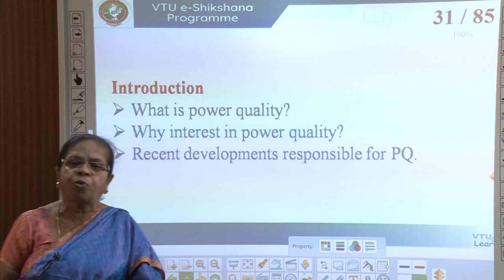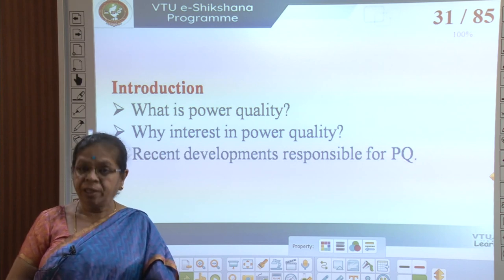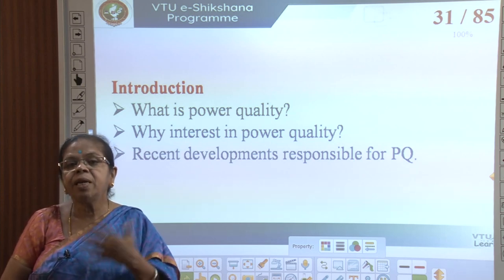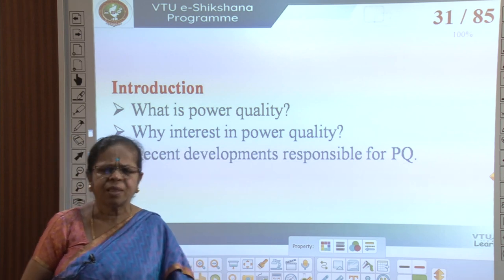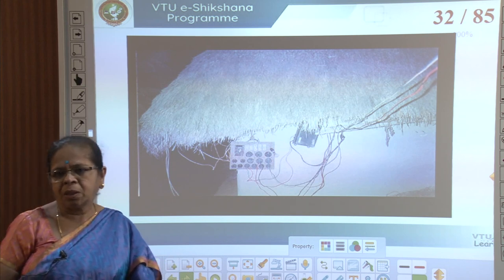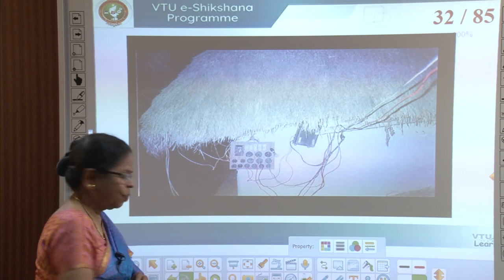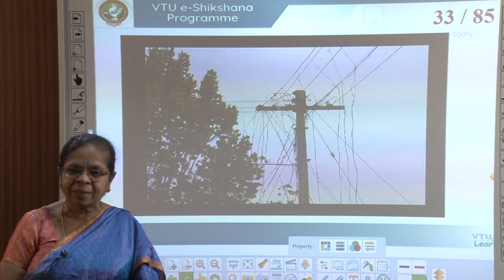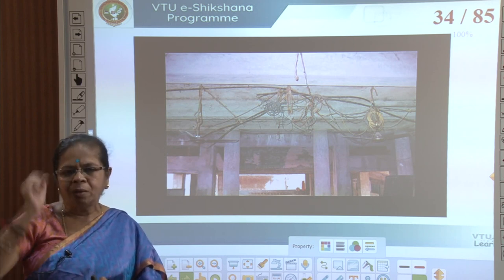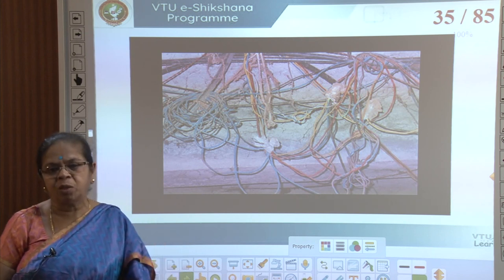Now let us move on to the issue of quality. We saw reliability; now let us see what is power quality and why we are interested in it. In a rural sector you would find distribution wires in a jumbled state, and in Asian countries with higher population density this is typical. We also see many types of equipment in everyday life — LEDs, TVs, variable frequency drives (VFDs) for industry, CFLs, adapters, and power supplies — representing a great variety of loads on the distribution system.